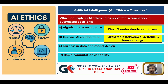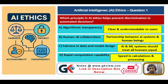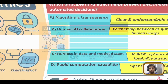Option A: algorithmic transparency means clear and understandable to users. Option B: partnership between AI systems and human beings. Option C: AI and ML systems should treat all humans equally. Option D: rapid computation capability. Since the question asks about preventing discrimination, option C — fairness in data and model design — is the answer.